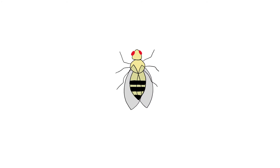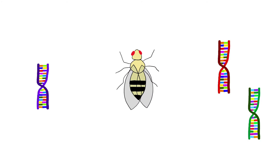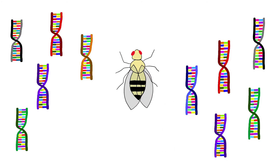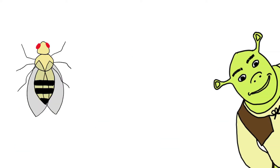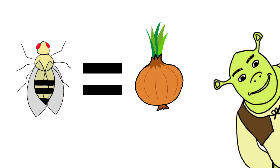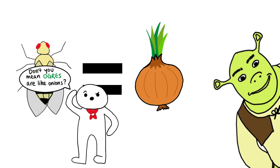Underlying every organism is a plethora of genetic variation that enables populations to evolve. As a wise ogre named Shrek once said, individuals in a population are like onions — they have layers, or something like that.